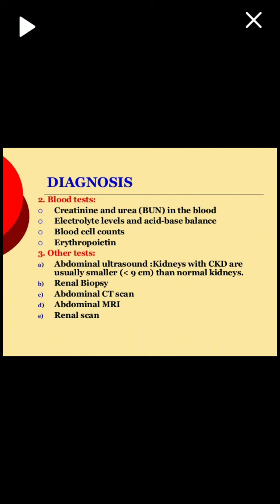Blood tests include serum urea and creatinine levels — if elevated, it indicates kidney damage and progression to end-stage renal disease. Electrolyte levels will be imbalanced, acid-base balance will be affected, blood counts will be hampered, and erythropoietin levels will be decreased. Other tests include abdominal ultrasound scan — kidneys with CKD are usually smaller than 9 cm compared to normal. Renal biopsy can identify the exact cause, and abdominal CT scan, MRI, or renal scan may also be prescribed.